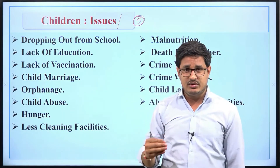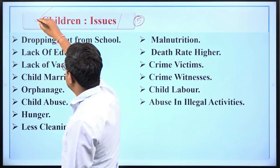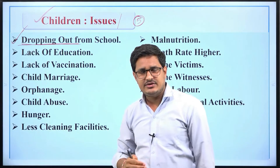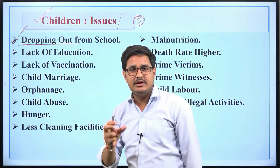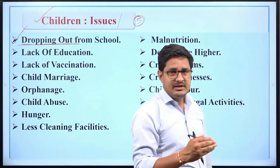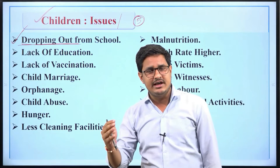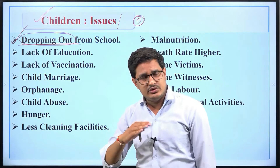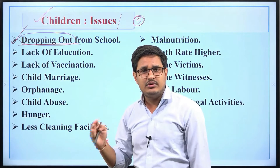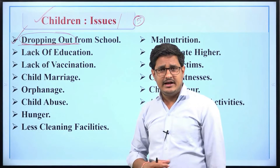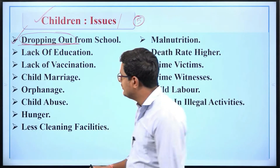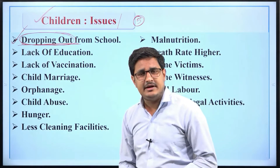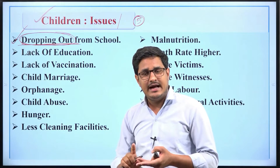The current issues and challenges of children include: first, dropping out from school. Education and degree do not guarantee a job, so as soon as children reach 15-16 years of age, they drop out of school and engage in economic activities. There are many reasons for school dropout — family's economic condition, social background, interest of children, and most importantly, the low value attached to educational degrees.